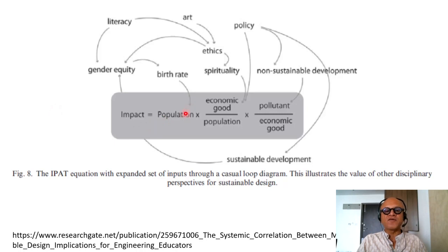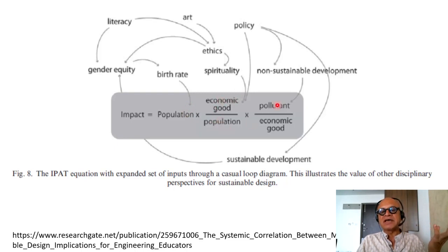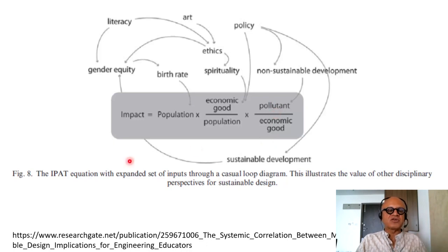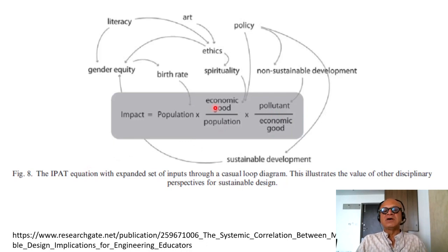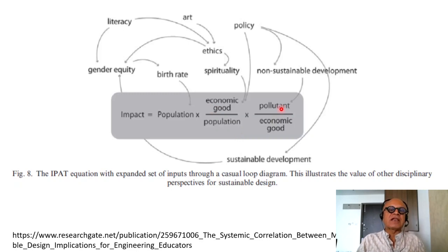Impact is a product of the total number of people consuming things, economic good divided by population — you can think of that as GDP per capita — and then pollutant per economic good or consumption impact per unit of consumption. Affluence means per capita GDP, your ability to consume, and technology means the impact of each unit of consumption.